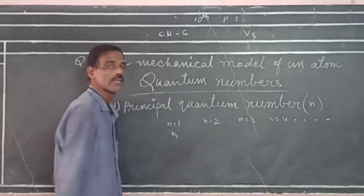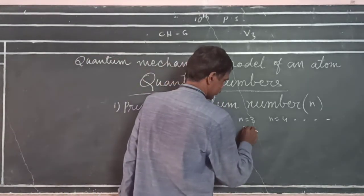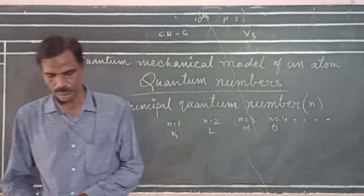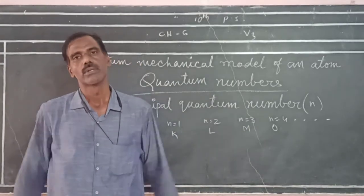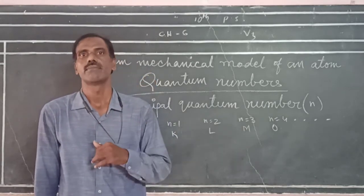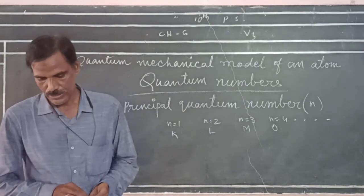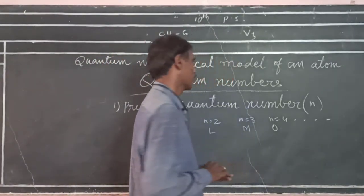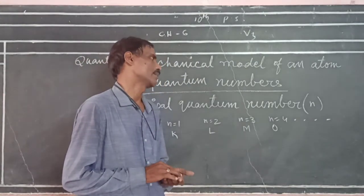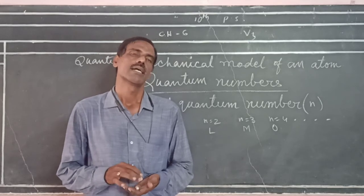For the K shell, n = 1. For the L shell, n = 2. For the M shell, n = 3. For the O shell, n = 4. The principal quantum number gives you the idea of the size of the atom and the energy of different particles. It is proposed by Niels Bohr and is represented by n.